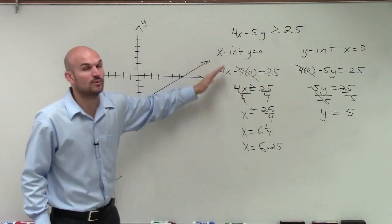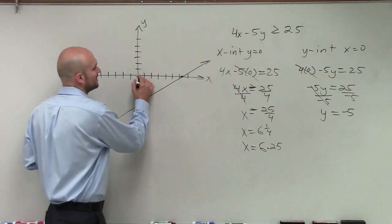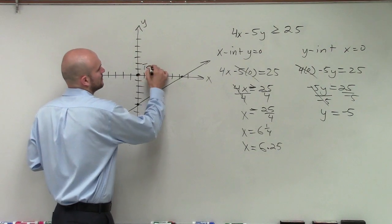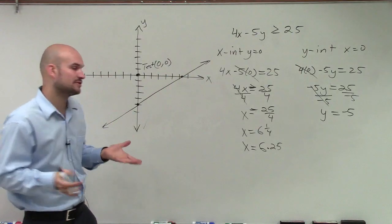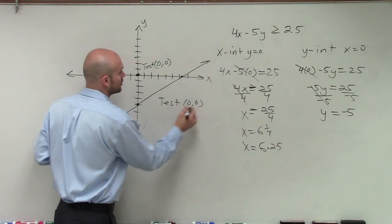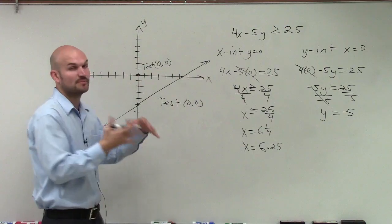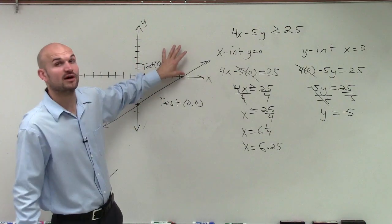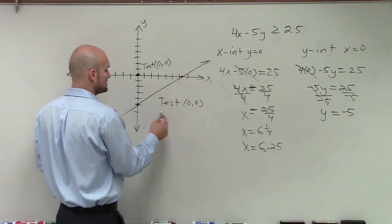Now, I just need to do your test point. And the best test point I like to do is test 0 comma 0. As long as your boundary line does not go through your test point, you can use 0, 0 as your test. So I'm going to test 0, 0. If it's true, we're going to shade towards our test point because we know all the values above it will be true. If it's false, we need to shade the other way.